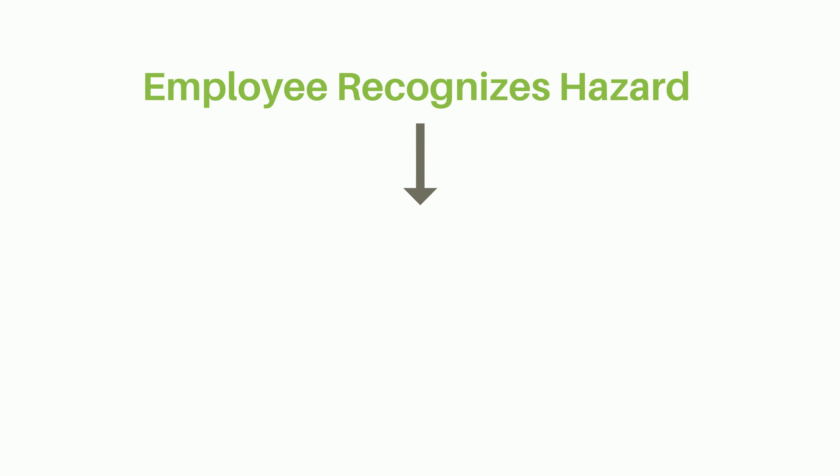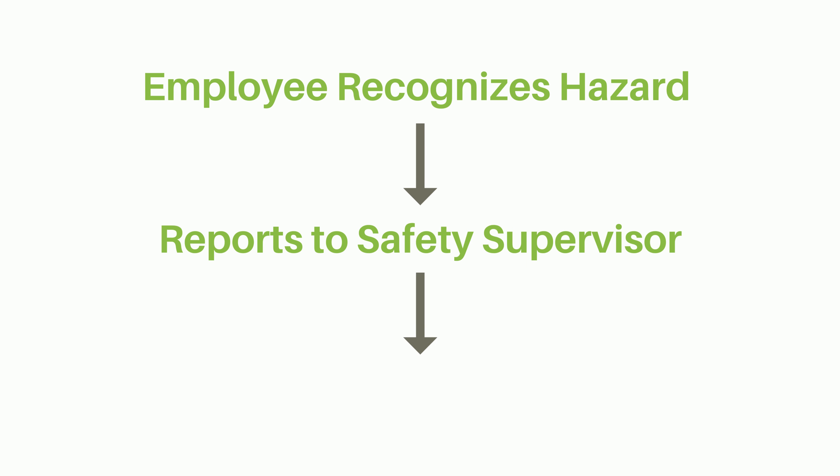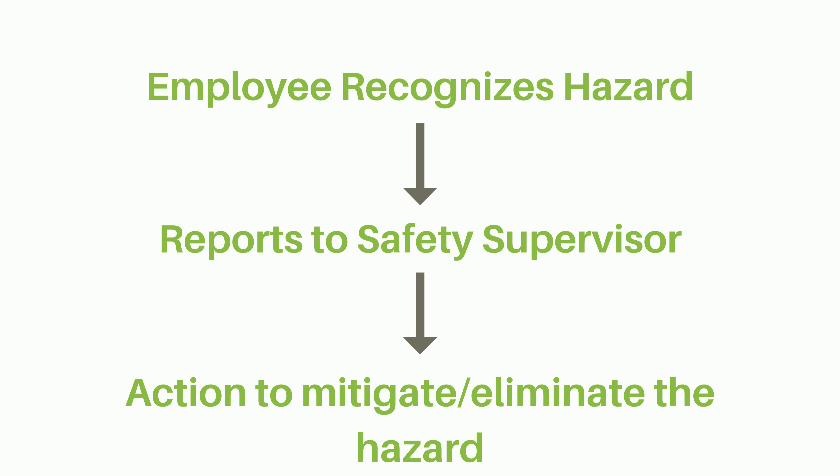For example, if an employee recognizes a potential hazard in the workplace, they can report it to their supervisor or safety team, who can then take appropriate action to mitigate or eliminate the hazard.